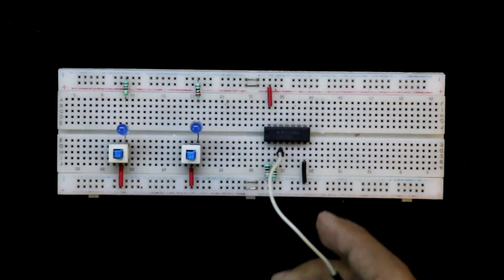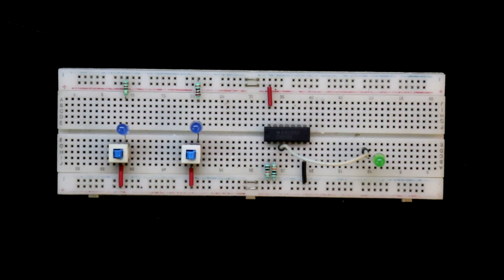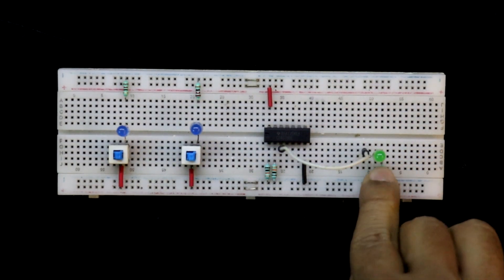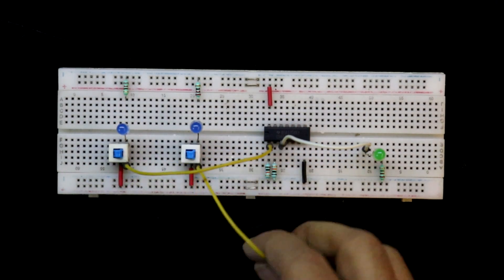Pin number 3 is output. And with this, we have to connect an LED. Input A to pin number 1. Input B to pin number 2.